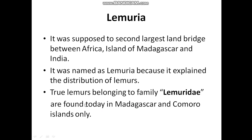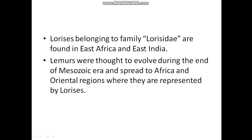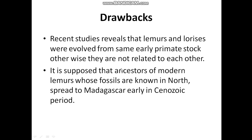Regarding Lemuria, lemurs are found today only in Madagascar and the Comoro Islands. Loris, belonging to the family Lorisidae, are found in East Africa and East India. Loris are closely related animals to lemurs. Recent studies revealed that lemurs and Lorisidae evolved from the same earliest primate stock, though they are not directly related to one another. It is supposed that ancestors of modern lemurs spread to Madagascar early in the Cenozoic.